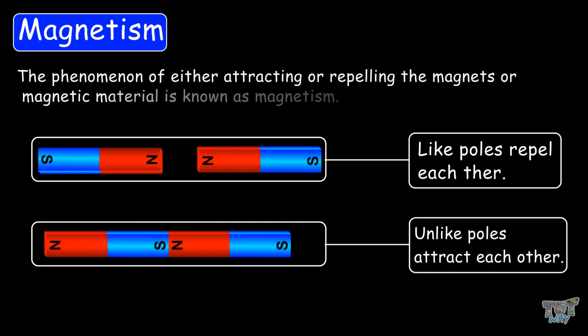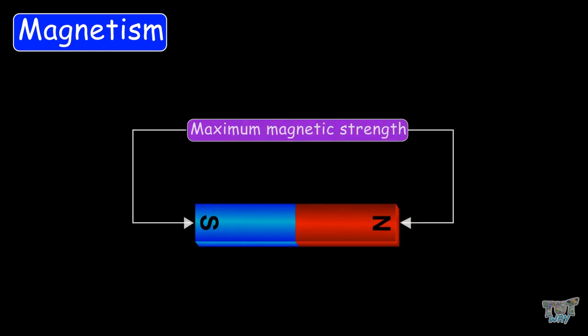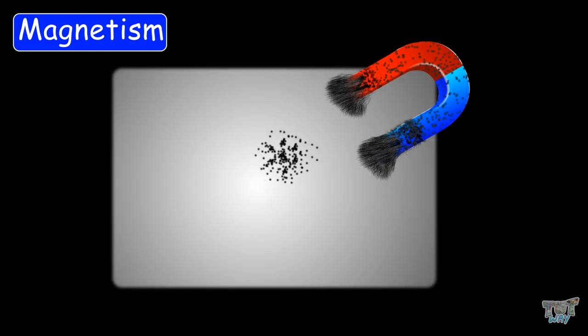The phenomenon of either attracting or repelling magnets or magnetic materials is known as magnetism. Now you know what magnetism is. The magnetic strength of a magnet is maximum at the poles. You can check this by bringing a horseshoe magnet near a pile of iron filings — you will observe that more iron filings concentrate at the poles of the horseshoe magnet.